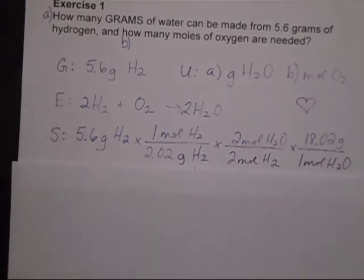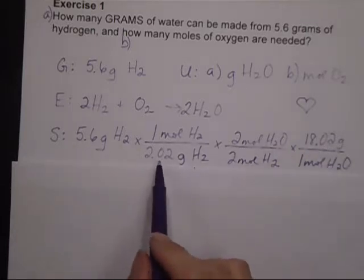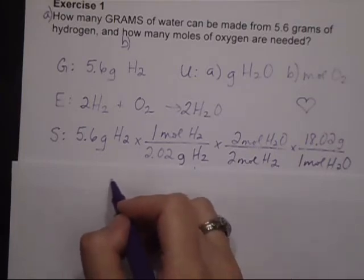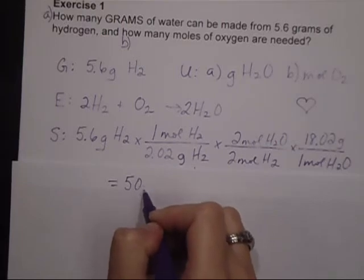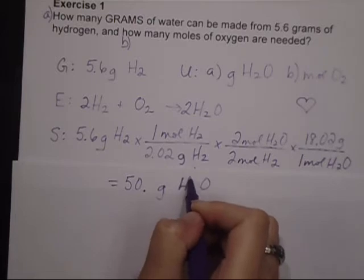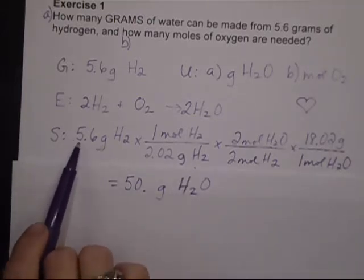Then, I can multiply through and divide as needed. So, as I multiply 5.6 times 2 times 18.02, get an answer, 4.04 on the bottom, divide the two of them, and I end up with 50.0 grams of H2O, because my significant figures only allow me to have two places in my answer.